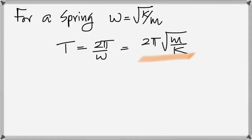If K is big, the time period is small, which means the frequency is big. Frequency is the number of oscillations per second, and the relation between period and frequency is f = 1/T. If the period is small, frequency is large; if the period is large, frequency is small.